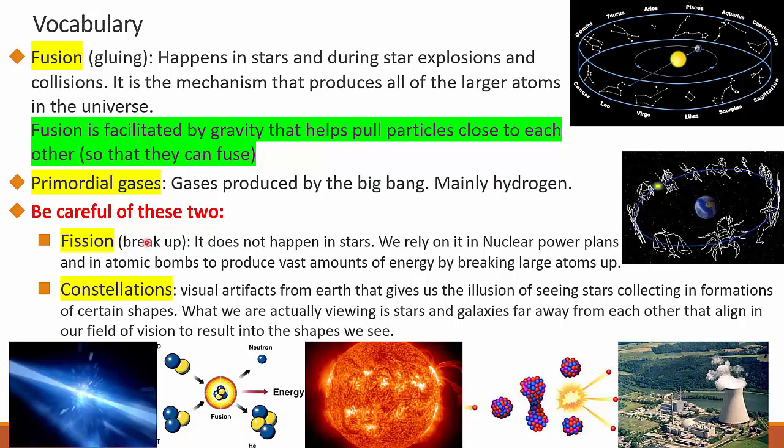Now we have two terms that you have to be careful from. Fission. Fission is the opposite of fusion. Instead of gluing, it is the breakup of atoms. It does not happen in stars. We rely on it on Earth in nuclear power plants and in atomic bombs to produce vast amounts of energy. That vast amount of energy we get by breaking larger atoms into smaller atoms.